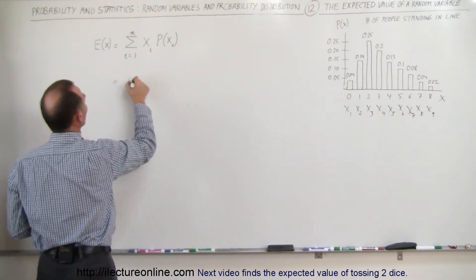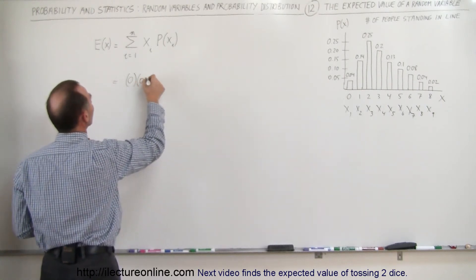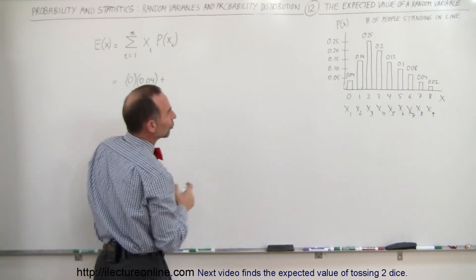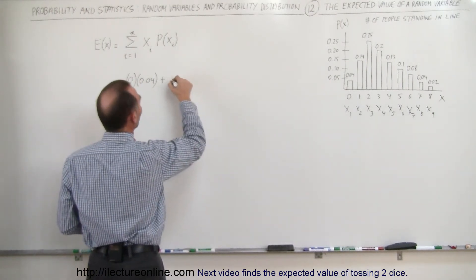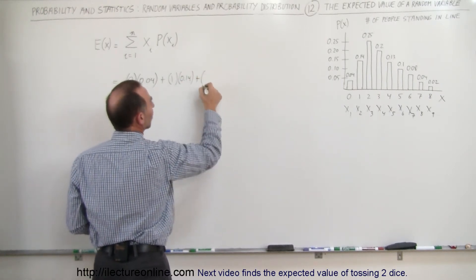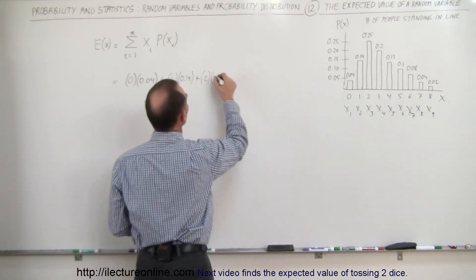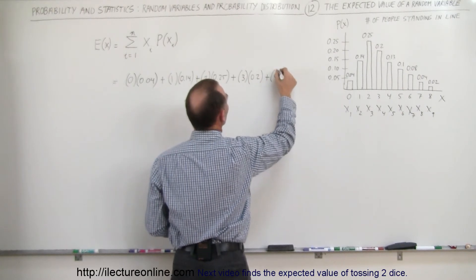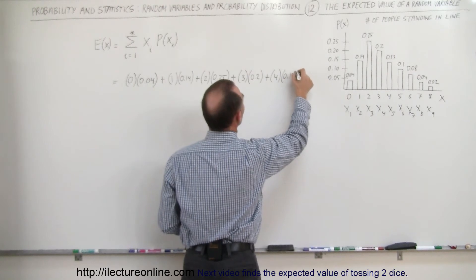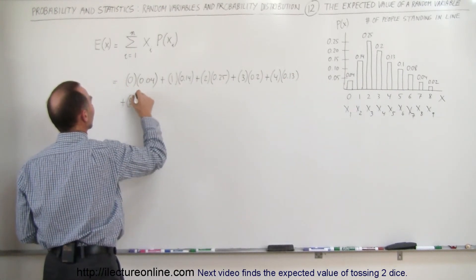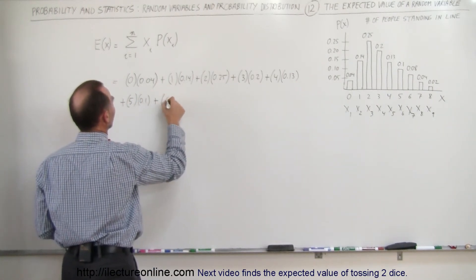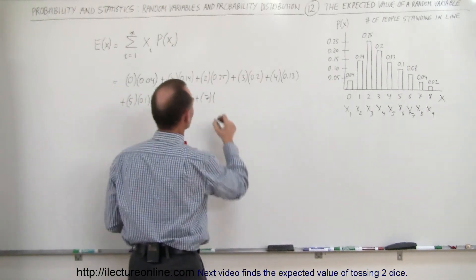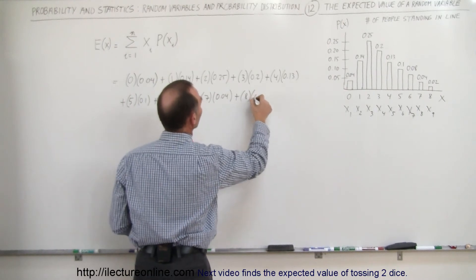So we get: x₁ is zero times the probability 0.04 — of course zero times any number is zero, so this doesn't add to the total — plus x₂ which is one times 0.14, plus two times 0.25, plus three times 0.20, plus four times 0.13, plus five times 0.10, plus six times 0.08, plus seven times 0.04, plus eight times 0.04.